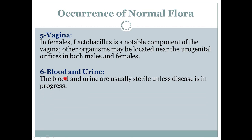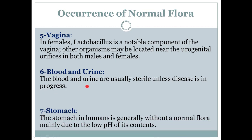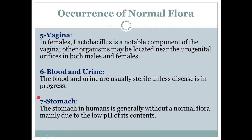Next is blood and urine — let's look at the occurrence of normal flora in our blood and urine. The blood and urine are usually sterile unless disease is in progress. Here sterile means germ-free. Meaning our blood and urine remain germ-free as long as no disease is in progress — no bacteria or any microorganism will be present in blood and urine.